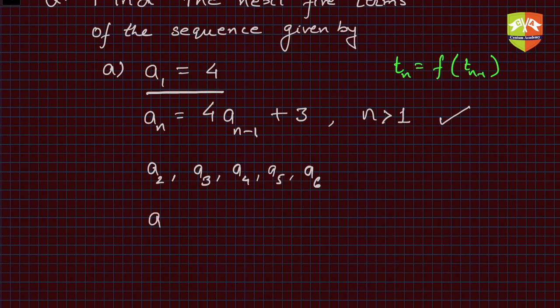What will be a2 according to this formula? a2 will be 4 times a1 plus 3. When it is n, this suffix is n minus 1. So if it is 2, it has to be 1, right? Hence, this is the first term, and a1 is 4, so 4 times 4 plus 3—that is 19. This is a2.